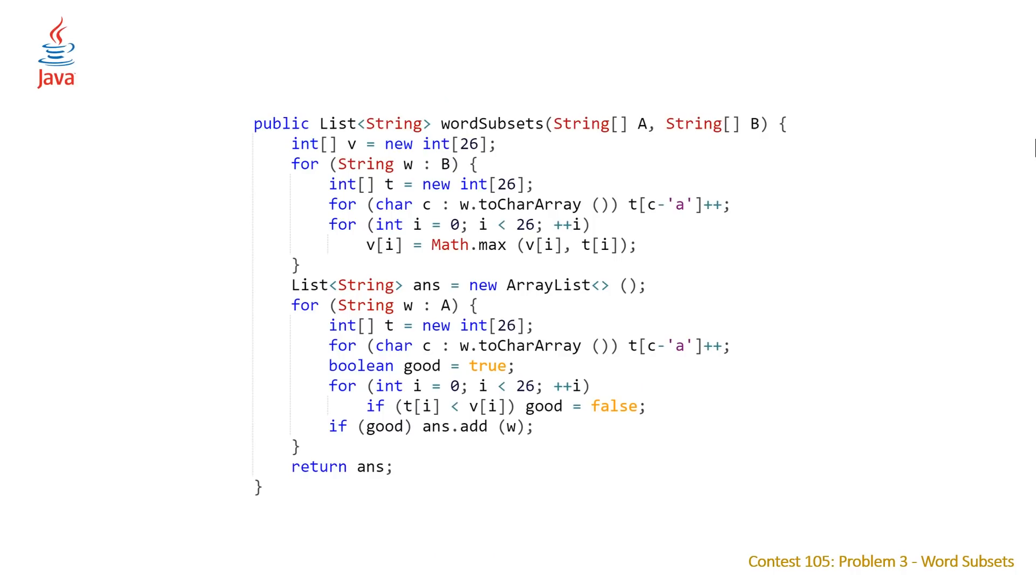So let's take a look at our Java solution. Very similar to our C++ solution. The only difference being really that we have some syntactical differences like toCharArray, because in order to use our enhanced for loop, we need to do that. And we don't have the define that shortens our for loop. So we have an extra line here. But basically, everything else is the exact same.